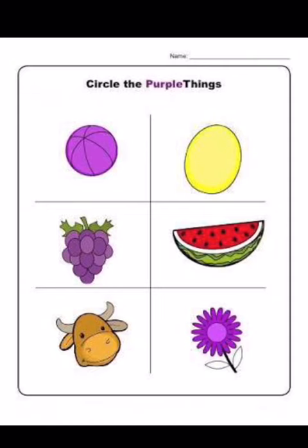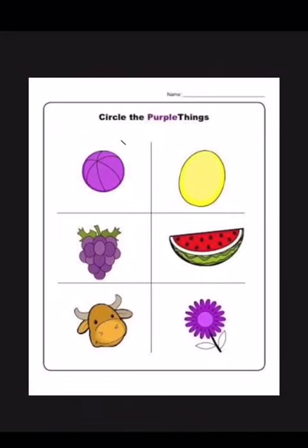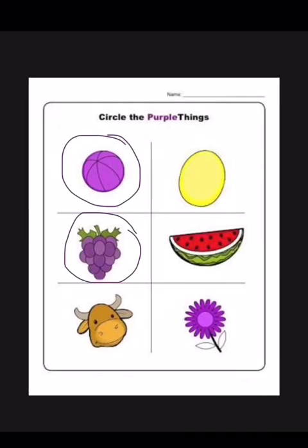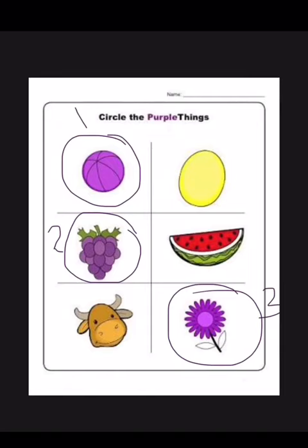Goinkans, now let's play a game. Tell me, how many purple objects are there in the picture? Three purple objects — very good! Purple ball, purple grapes, and a purple flower. One, two, and three. Very good!